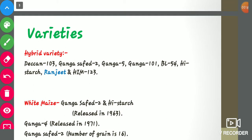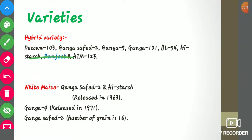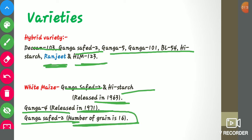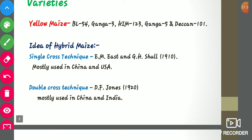Now come to its varieties. The first one is hybrid variety. Simply speaking, this is the result of crossing two different inbred lines. Examples are Decan 103, Ganga Safed 2, Ganga 5, Ganga 101, BL54, Hi-Starch, Ranjit, and HIM 123. According to the color of grains, these are of two types. White maize varieties are Ganga Safed 2 and Hi-Starch, both released in 1963, and Ganga 4, released in 1971. Ganga Safed 2 has 16 rows of grains. Yellow maize varieties are BL54, Ganga 3, HIM 123, Ganga 5, and Decan 101.